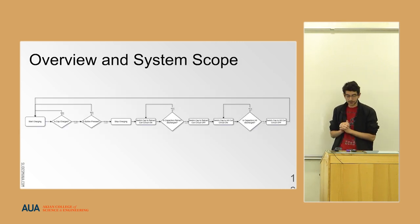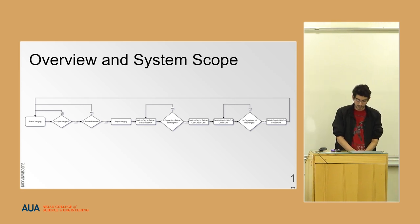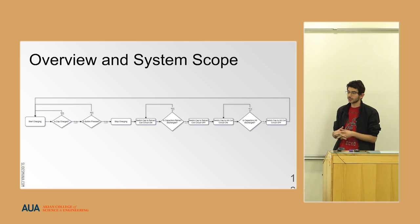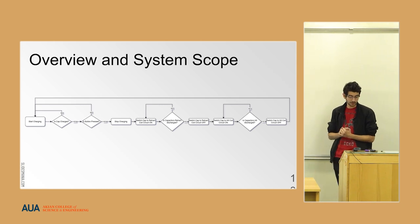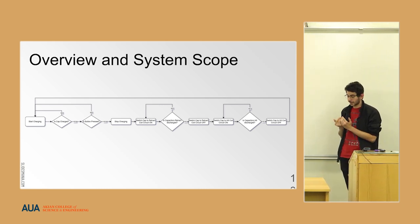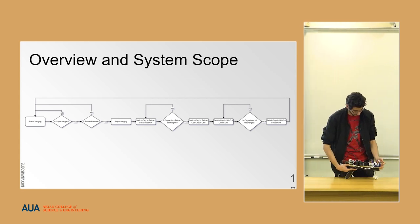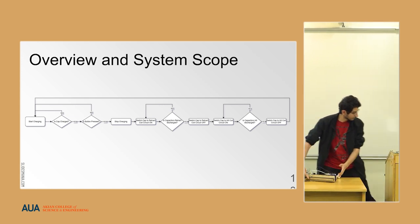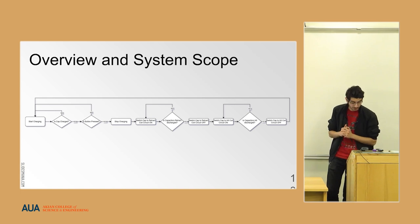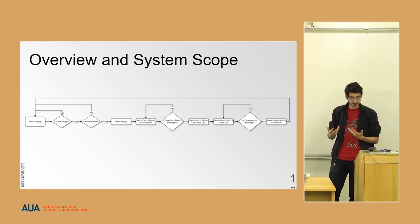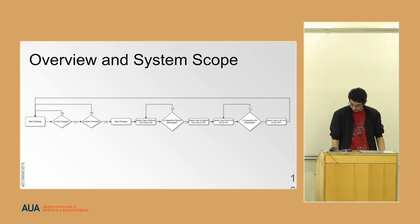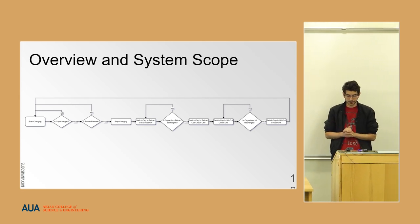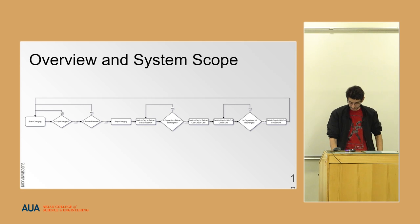The Arduino program works as follows: first we start charging, then we check if the buttons are pressed. When the button is pressed, we stop charging and switch the capacitor retract mechanism so the coil activates and the hammer strikes. When the retract capacitor is discharged, we switch the capacitor that acts as the re-cocking mechanism. After that we check if that capacitor is discharged and then start the process again.